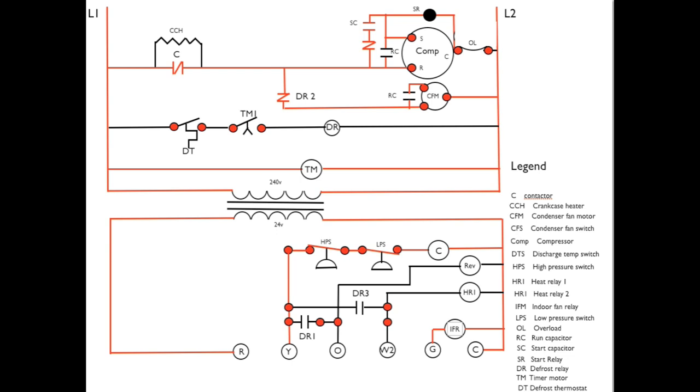Okay, this is sequencing on a call for first stage heat on the heat pump. Starting in the low voltage, power will pass from R to G to energize the indoor fan. This energizes the indoor fan relay, which energizes the indoor fan.